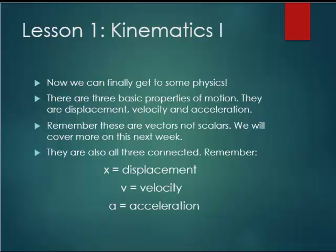Next up, we have kinematics, or we can finally get to some physics now that we've got a lot of the requisites out of the way. So there are three basic properties of motion, and they are all actually connected. They are displacement, velocity, and acceleration. Remember, these are vector quantities, not scalars. Vectors are physical quantities that have magnitude and direction. So technically, displacement is a certain distance in a certain direction, velocity is a certain speed in a certain direction, and acceleration is an acceleration in a certain direction. They are related, as we're going to see in the upcoming slide, and they are almost always described as x for displacement, v for velocity, and a for acceleration.